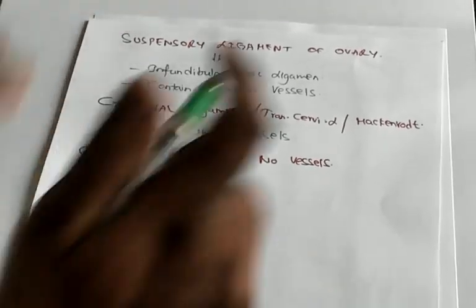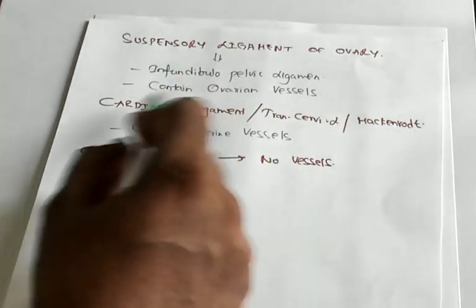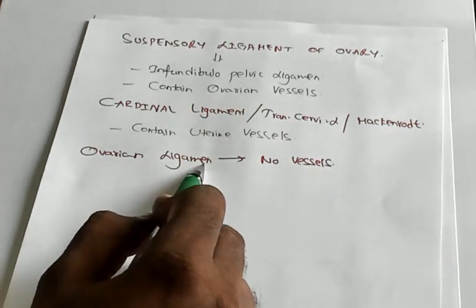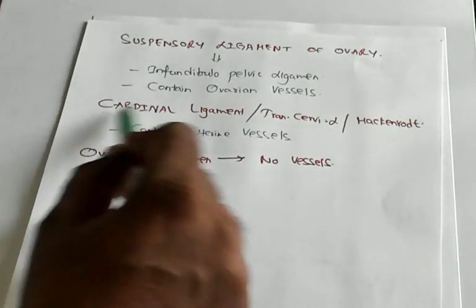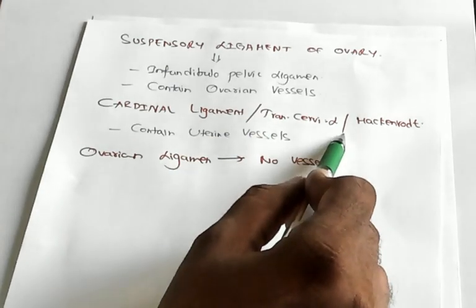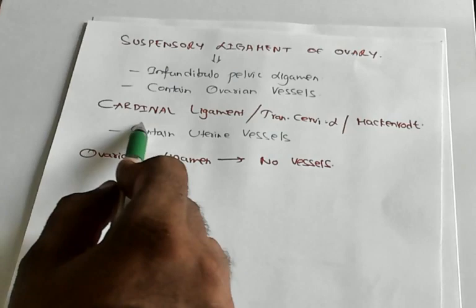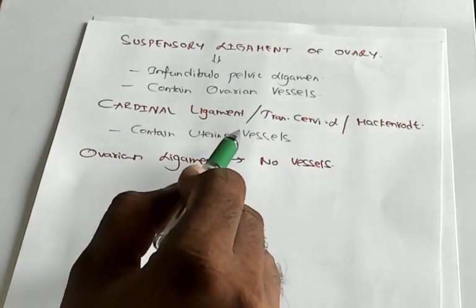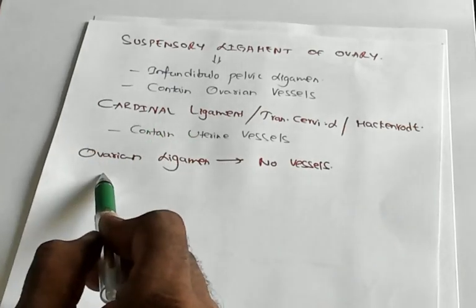We have reached one more point before we go to the supports of uterus. Suspensory ligament of the ovary is also called infundibulopelvic ligament and it contains the ovarian vessels. You have to remember one thing, ovarian ligament has no vessels at all. Ovarian vessels are present in the suspensory ligament of the ovary. Then, cardinal ligament, please don't forget. Transverse cervical ligament, that is cardinal only. Mackenrodt's ligament is also cardinal only. So it has three different names. It contains uterine vessels. They are the ones which are carried by cardinal ligament.